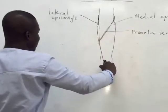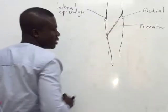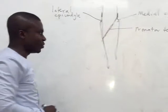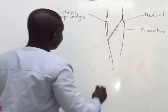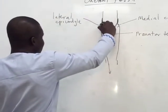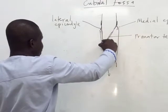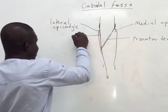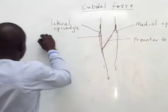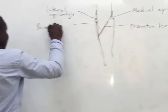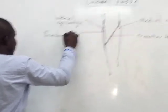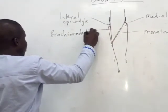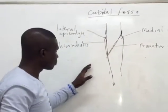The brachioradialis muscle inserts all the way into the styloid process of the radius. This muscle is known as the brachioradialis muscle.